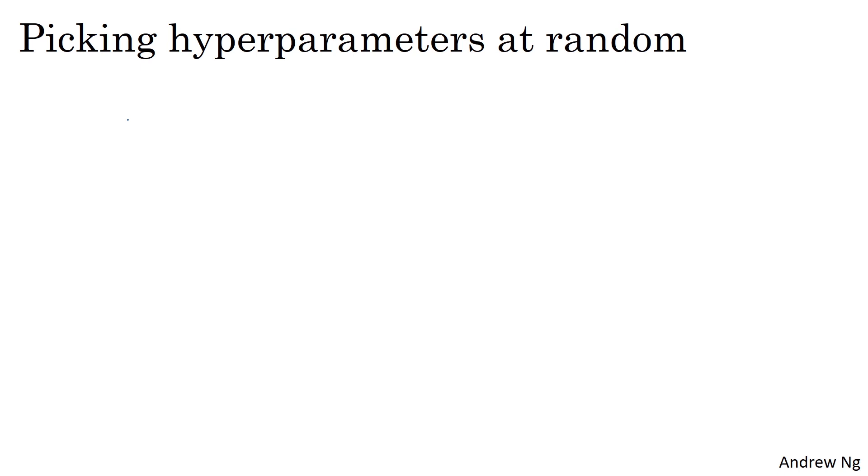Let's say that you're trying to choose the number of hidden units n^L for a given layer L. And let's say that you think a good range of values is somewhere from 50 to 100. In that case, if you look at the number line from 50 to 100, maybe picking some number of values at random within this number line is a pretty reasonable way to search for this particular hyperparameter.